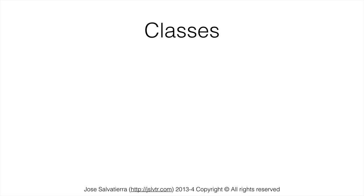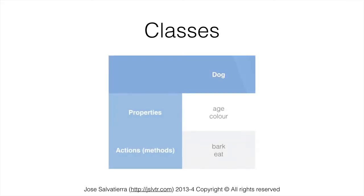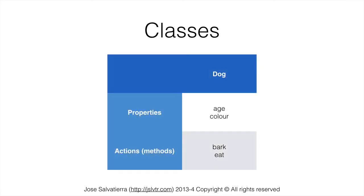All objects of the class, although they have different properties, will have the same behavior. Let me explain this with a very funny example. Let's say we have a class called dog. Dog has properties and also some behaviors, some actions it can do, and these are going to be methods in our program.